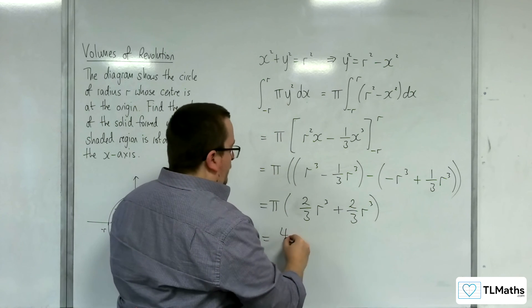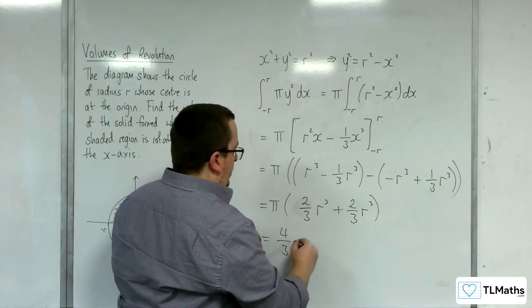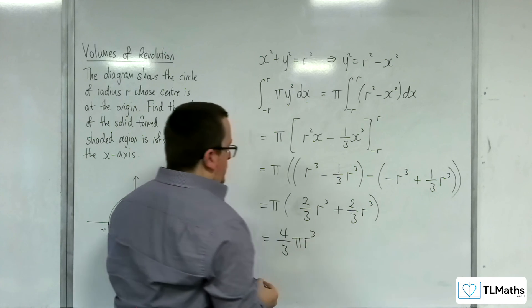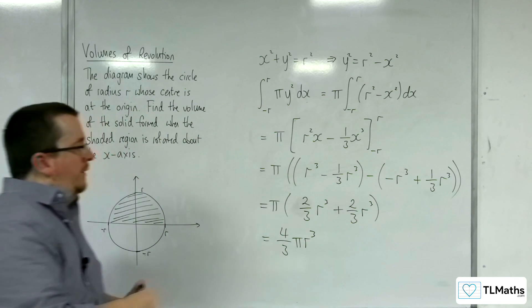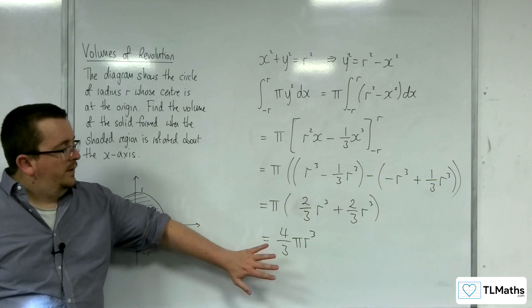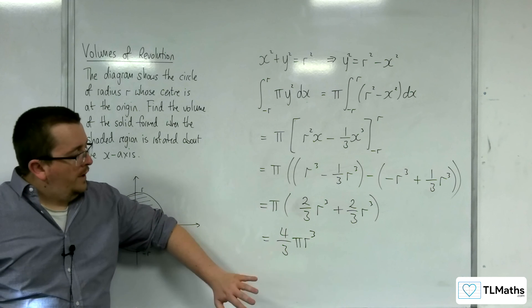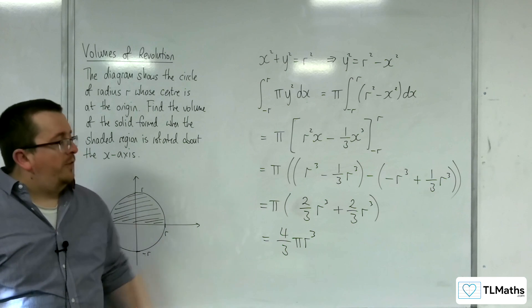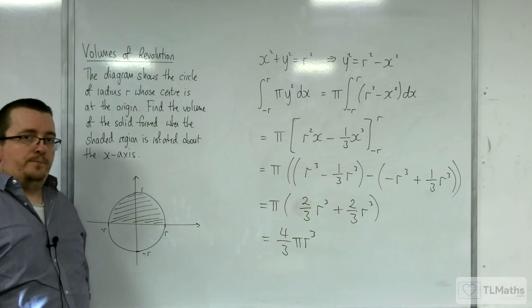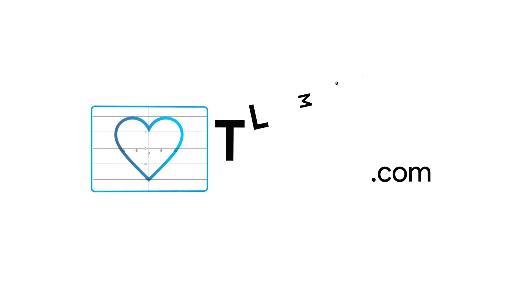Adding the two parts together gives us four thirds pi r cubed. And that is where the formula for the volume of a sphere comes from.